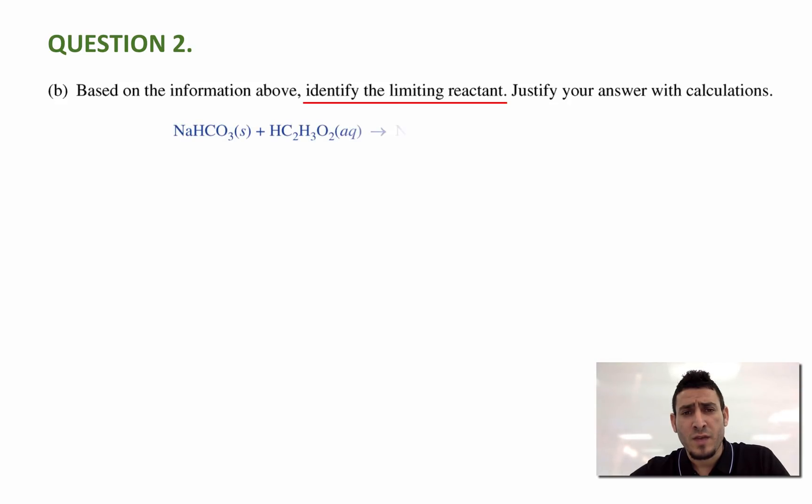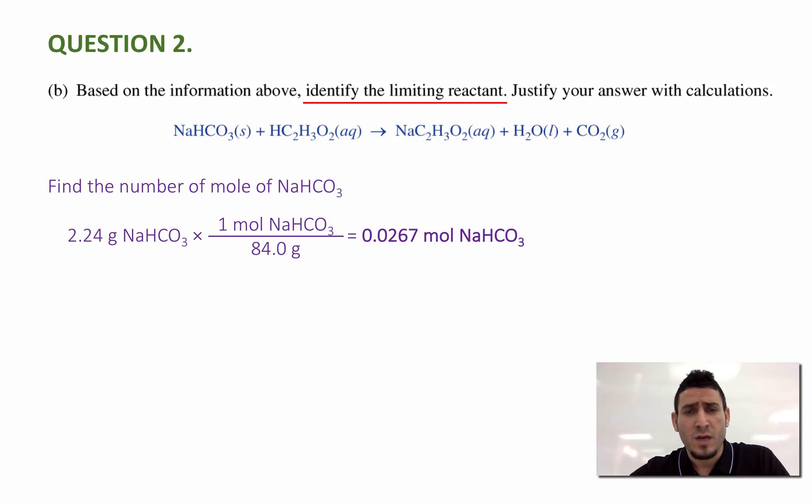Now if we take a look at the reaction again, I should calculate the number of moles of both reactants. So if I find the number of moles of sodium hydrogen carbonate, I have the mass. So I have the mass of 2.24 grams of sodium hydrogen carbonate multiplied by the ratio 1 mole over 84.0 grams, which is actually the molar mass. And the answer will be 0.0267 mole sodium hydrogen carbonate.